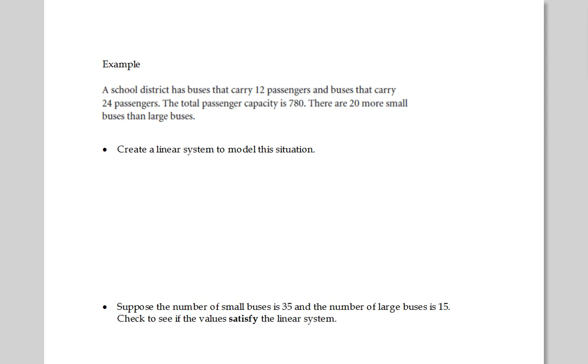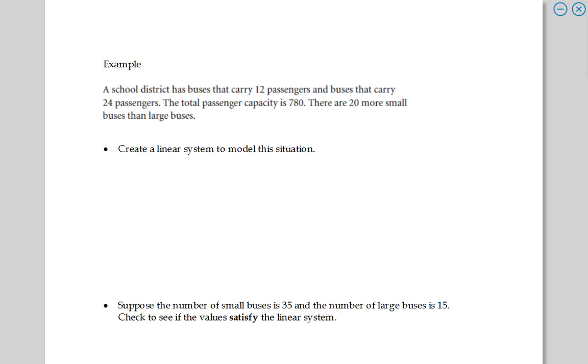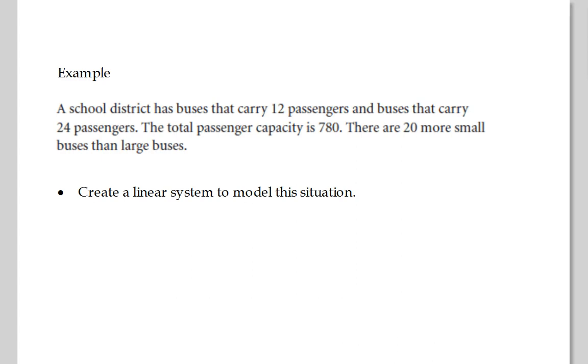Let's try this one. These are tough to do at first, but hopefully after a while you get good at them. So we have here a school district that has buses that carry twelve passengers, and buses that carry twenty-four passengers. And the total passenger capacity is seven hundred and eighty, and there's twenty more small buses than large buses. So this is a handful of things you need to take care of. It's quite challenging. So you have to think two things, two ideas really. What are the two ideas? There are people, and there are buses. So you're going to have to have an equation that talks about buses, and you're going to have to have an equation that talks about people.